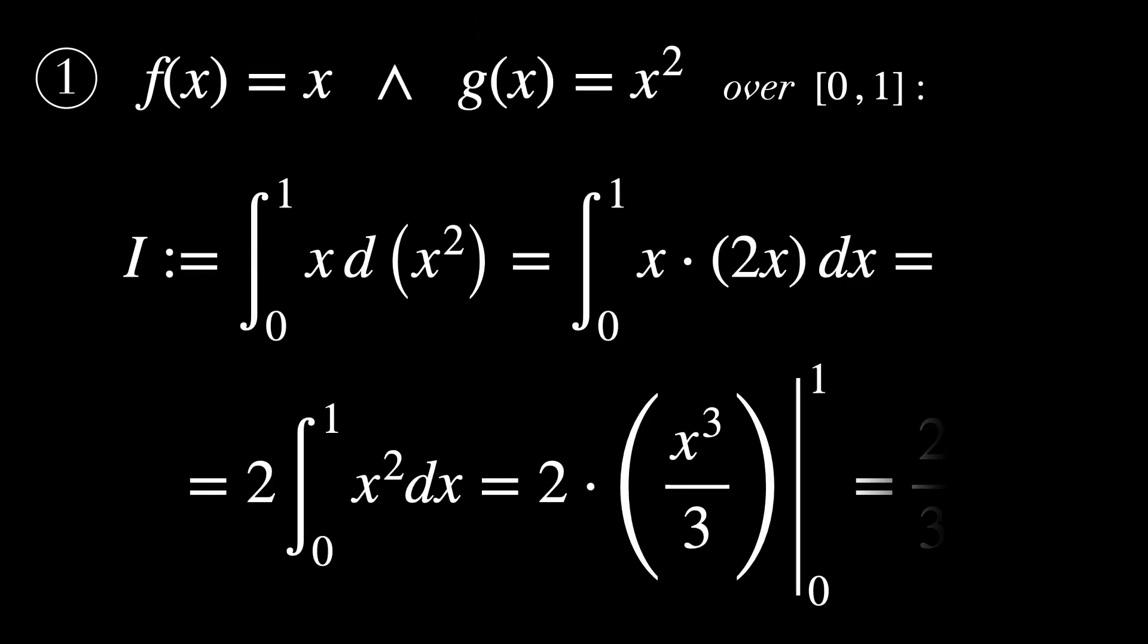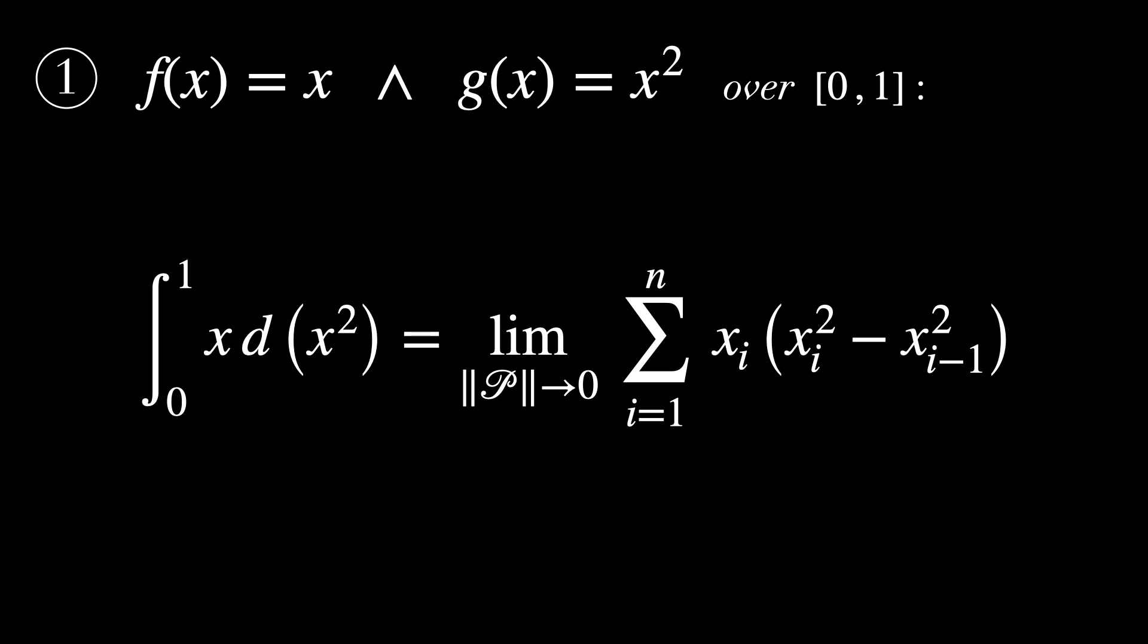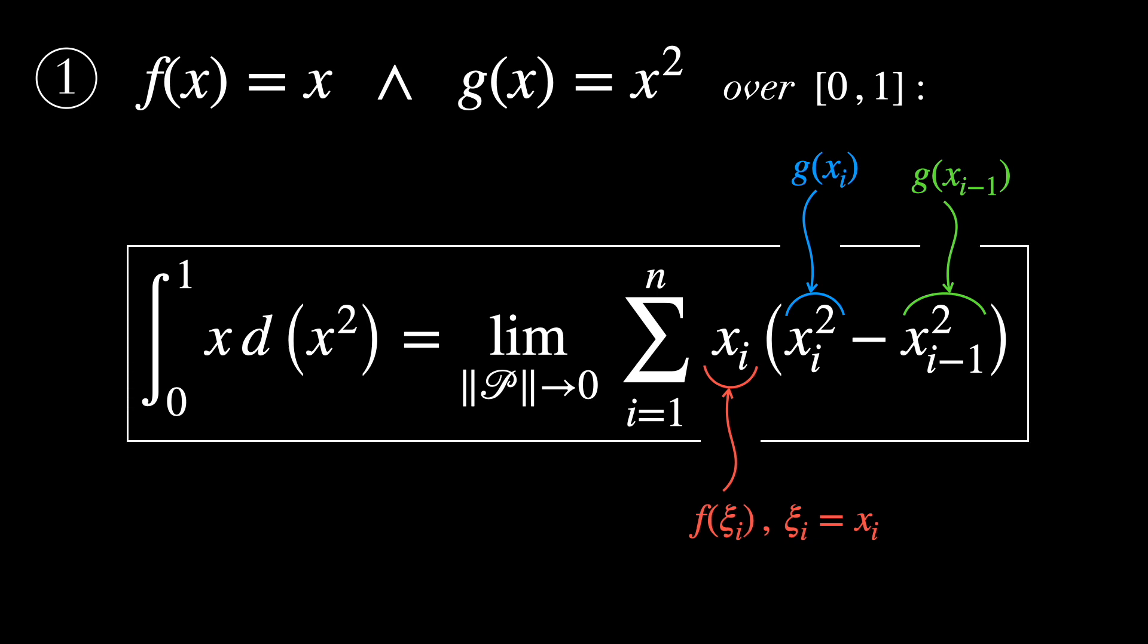The first example of this video was the calculation of the Riemann-Stieltjes integral for f of x equals x and g of x equals x² over the interval [0,1]. Let's rewrite this integral using our more precise and rigorous definition. So, the limit, when the partition is refined to contain an infinite number of points, of the sum of f at the point ξᵢ times the difference g(xᵢ) - g(xᵢ₋₁). And the really cool thing that we are about to do is to solve this Riemann-Stieltjes sum limit analytically, step by step. But hey, don't just watch it. Try to calculate the limit by yourself and then watch its solution.